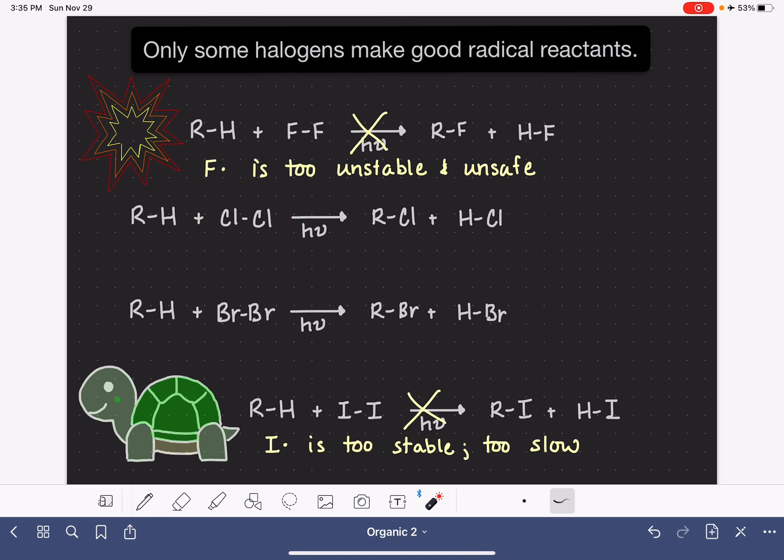They are both in the middle in terms of size, stability, and safety. In these two reactions here, I am showing an alkane reacting with the halogen molecule in the presence of light, which forms a halogen radical. And that halogen radical then reacts with the alkane to form an alkyl chloride or an alkyl bromide.